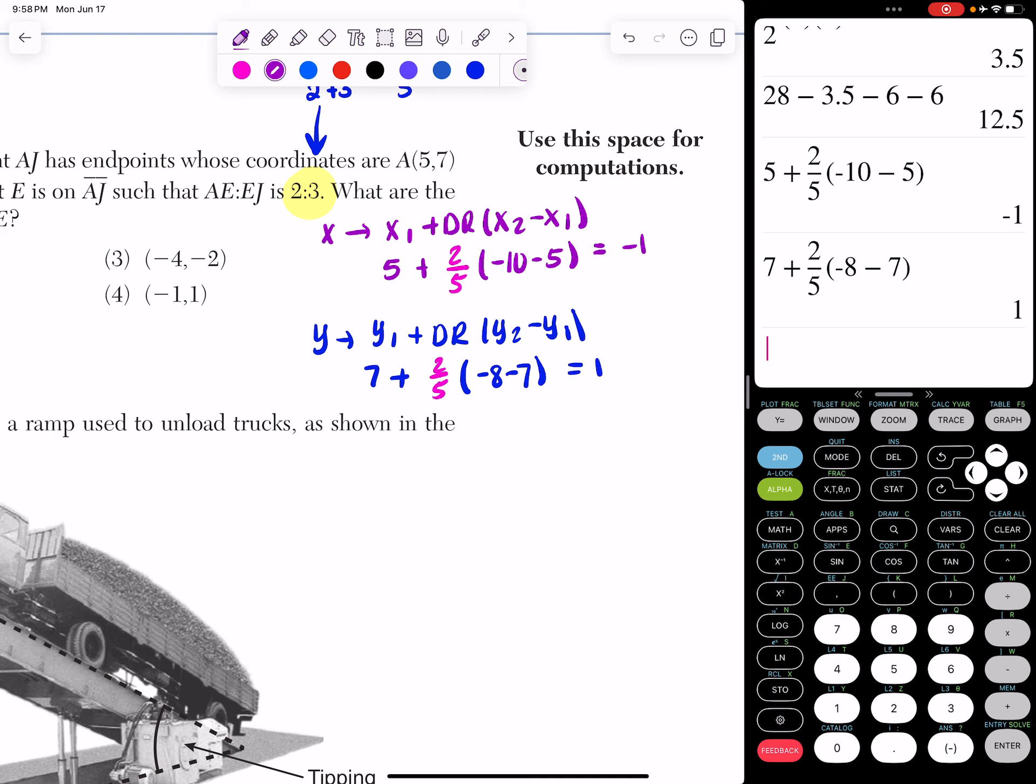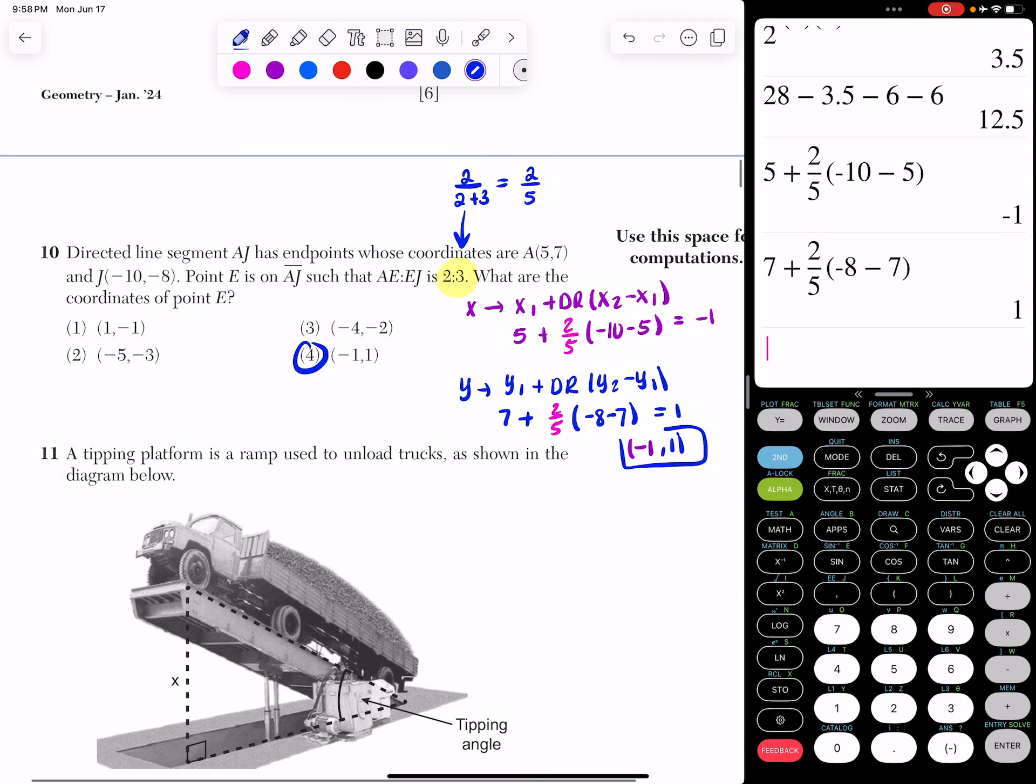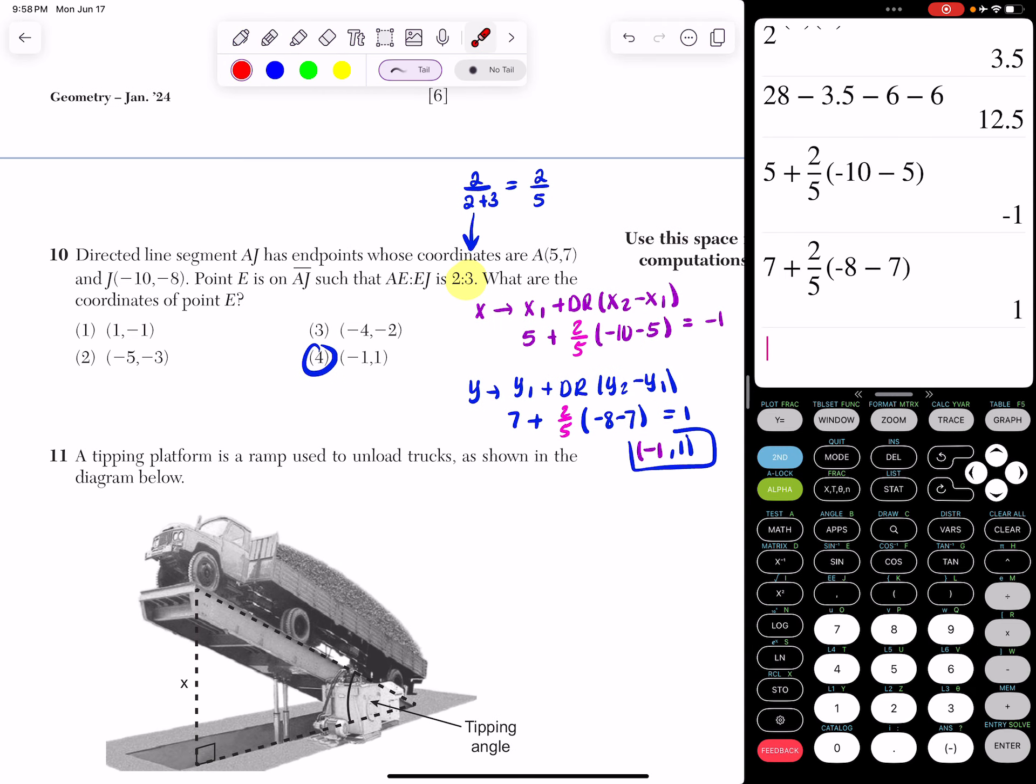So when I put it together, I get negative 1 comma 1 as my final answer. So this is going to be answer choice 4. Whenever you do this, just do that setup. It's going to work every single time. Just always start with the first point and then the second point that they give you.